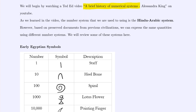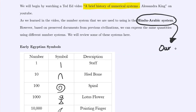Whenever we talk about our number system, a vocabulary word you'll want to be familiar with in this chapter is the idea of the Hindu-Arabic system. That is our number system. So if you ever see Hindu-Arabic system, just think of that as our numbers. It is base 10 and has representations in terms of place value. Based on preserved documents from previous civilizations, we've been able to piece together different number systems that existed throughout world history. Let's start with the Egyptian symbols.